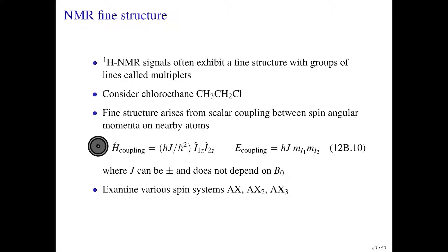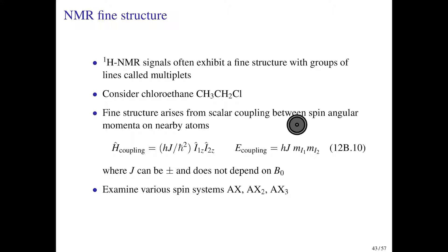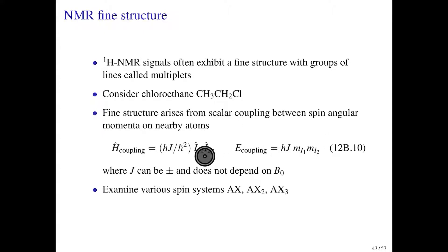Here is the Hamiltonian describing that coupling. We have a coupling constant J, and then the two z-components of the spin angular momenta for the different nuclei — group one and group two — are coupled together. The energy associated with this coupling depends on the m_i values for each of the two groups of protons. J can be positive or negative, but importantly it does not depend upon the external magnetic field.